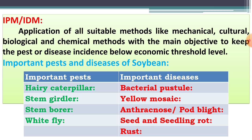First, what is meant by IPM and IDM? IPM means Integrated Pest Management; IDM means Integrated Disease Management. This is the application of all suitable methods — cultural method, biological method, chemical method, and mechanical methods — for controlling or reducing the pest population. The main objective is to keep the pest or disease incidence below the economic threshold level.